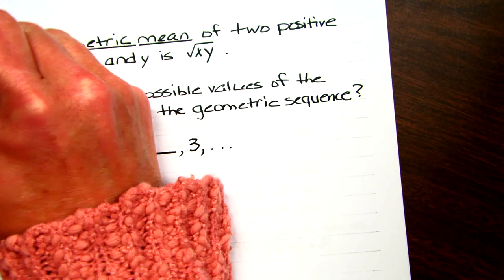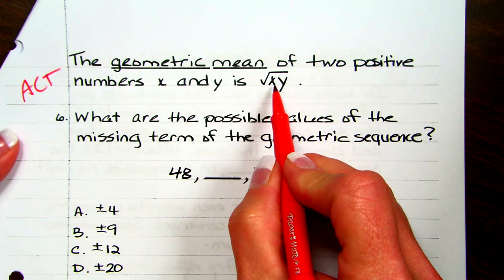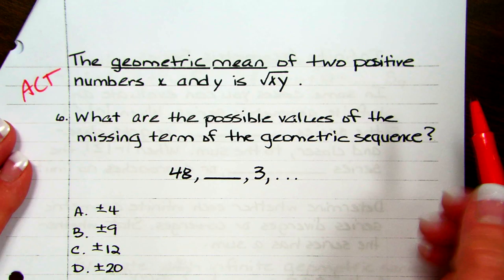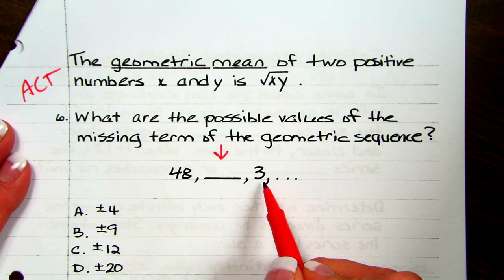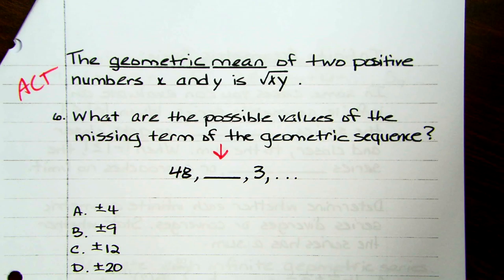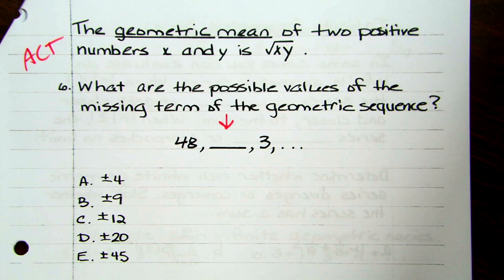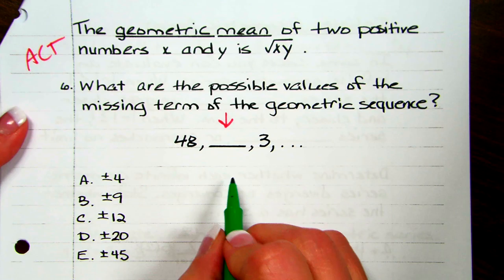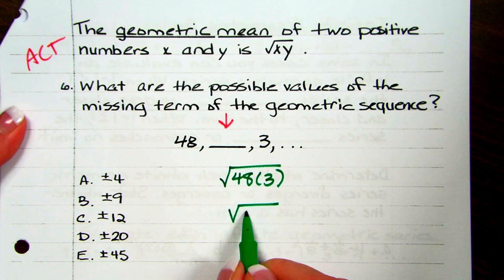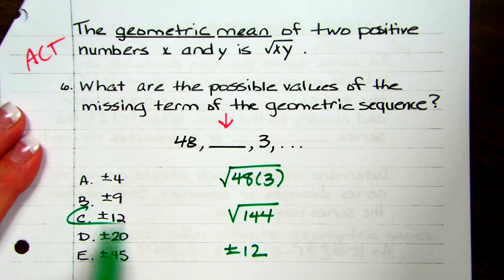There's also a geometric mean, and you would see this on the ACT, just like you did the arithmetic mean. It is found by taking the square root of x times y — those would be the two numbers in a geometric sequence when you have a missing number in between. For the given sequence, you take the square root of 48 times 3, which is the square root of 144. When taking a square root, you could have plus or minus 12, so your answer would be C.